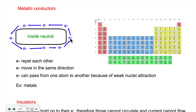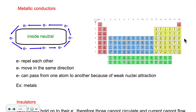Whether we're talking about an electrical circuit or static electricity, it works the same way. Electrons repel each other, forcing movement, and that creates the energy we call electricity. They all move in the same direction, and they can pass from one atom to the other because of their weak nuclear attraction — weak because there are fewer protons than in non-metals.